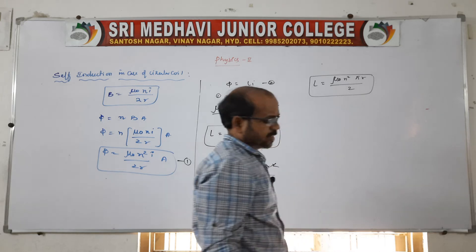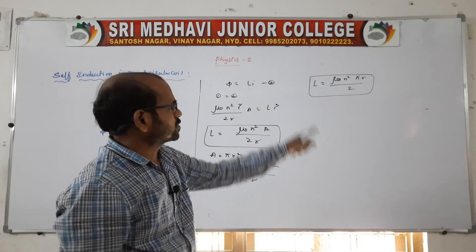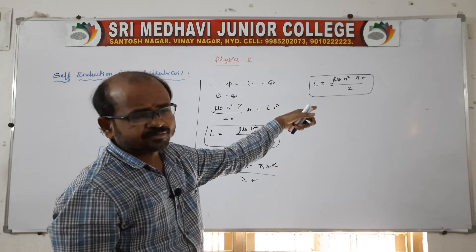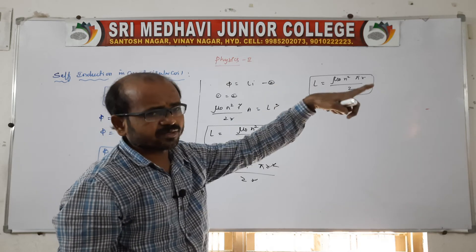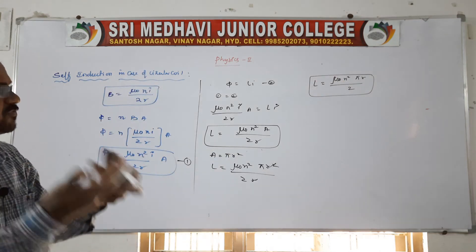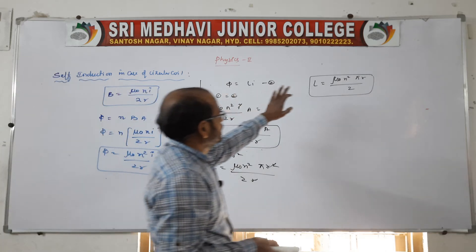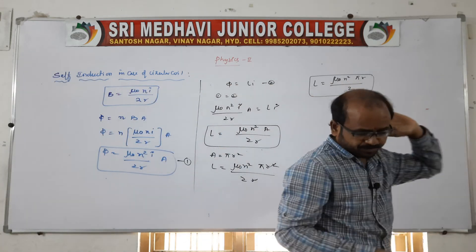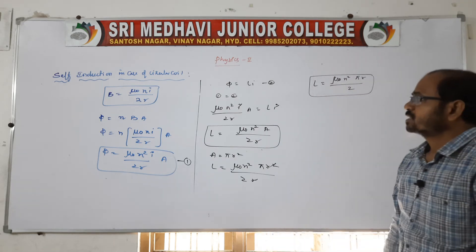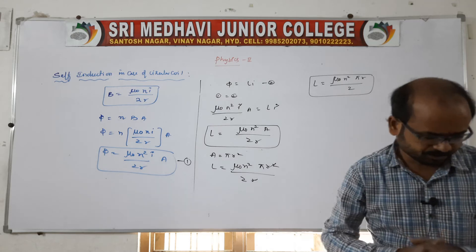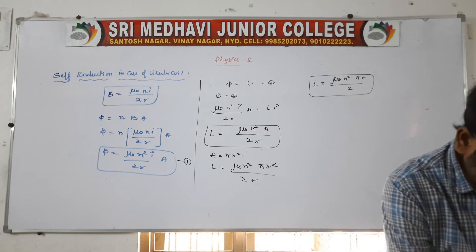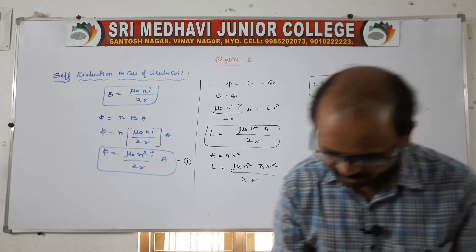For the EMF of a circular coil acting as a self inductor: e = −L·(di/dt), where L = μ₀·N²·πr / 2. Substituting L directly gives the EMF in case of a circular coil acting as a self inductor.